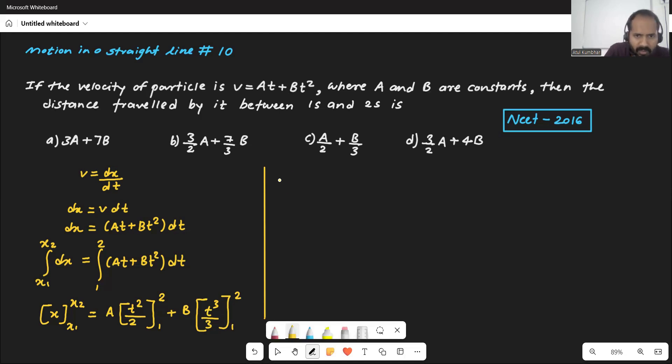Then let's take, so it will be on the left side, it will be x₂ minus x₁. Then here, A, if you can put the limit values, you will get that T² 2² square 4 divided by 2 minus 1² square 1 divided by 2. Plus your B, then T³ which means 2³ 8 divided by 3 minus 1 divided by 3.